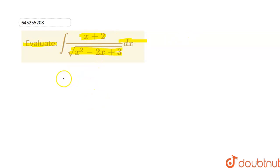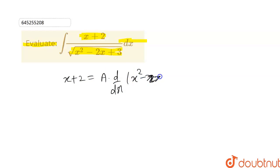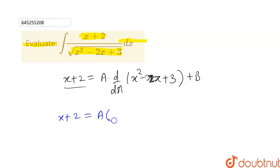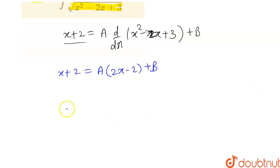To integrate this type of question, let's try to write x plus 2 as equal to a times the differentiation of (x squared minus 2x plus 3) plus b. So we have x plus 2 on the left hand side, and on the right hand side we get 2ax minus 2a plus b. Now to get the value of a and b, let's compare the coefficient of x. In the left hand side we have 1, and in the right hand side we have the coefficient of x as 2a.